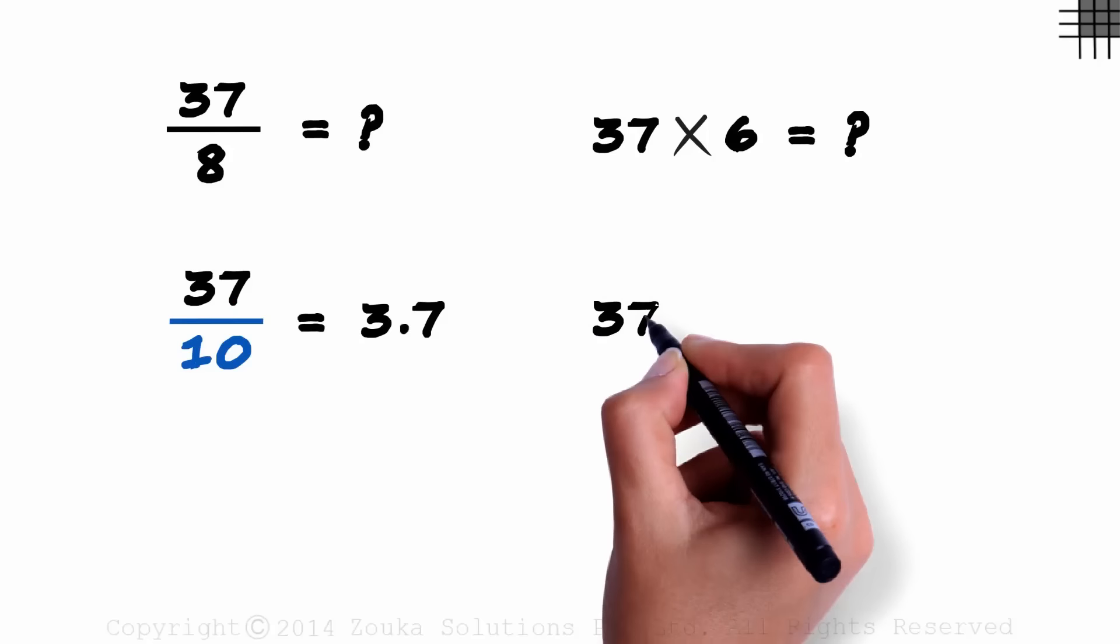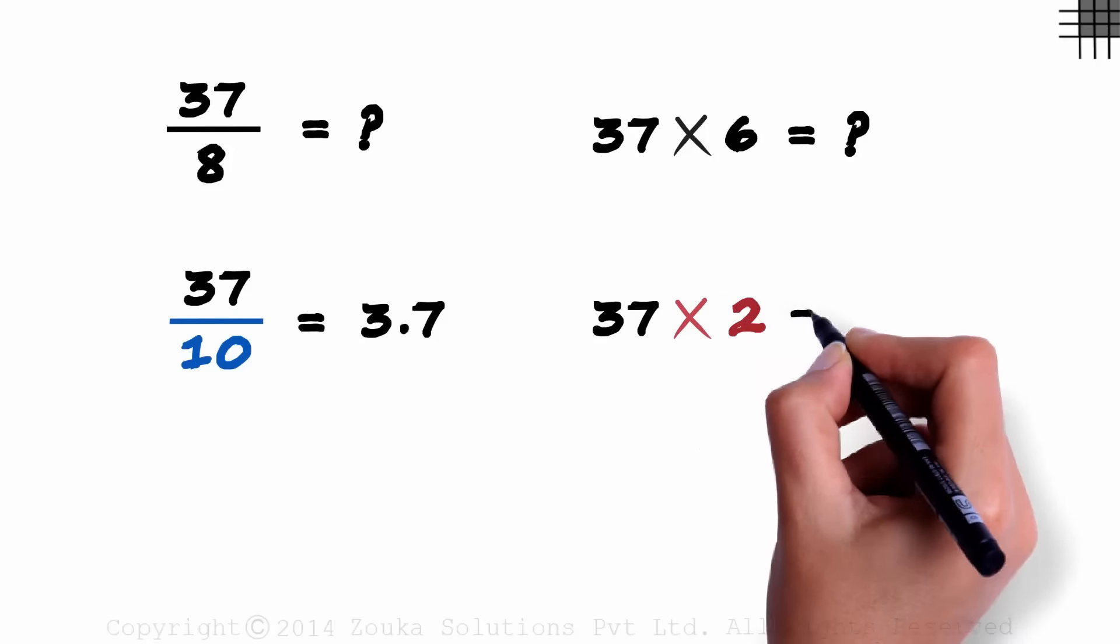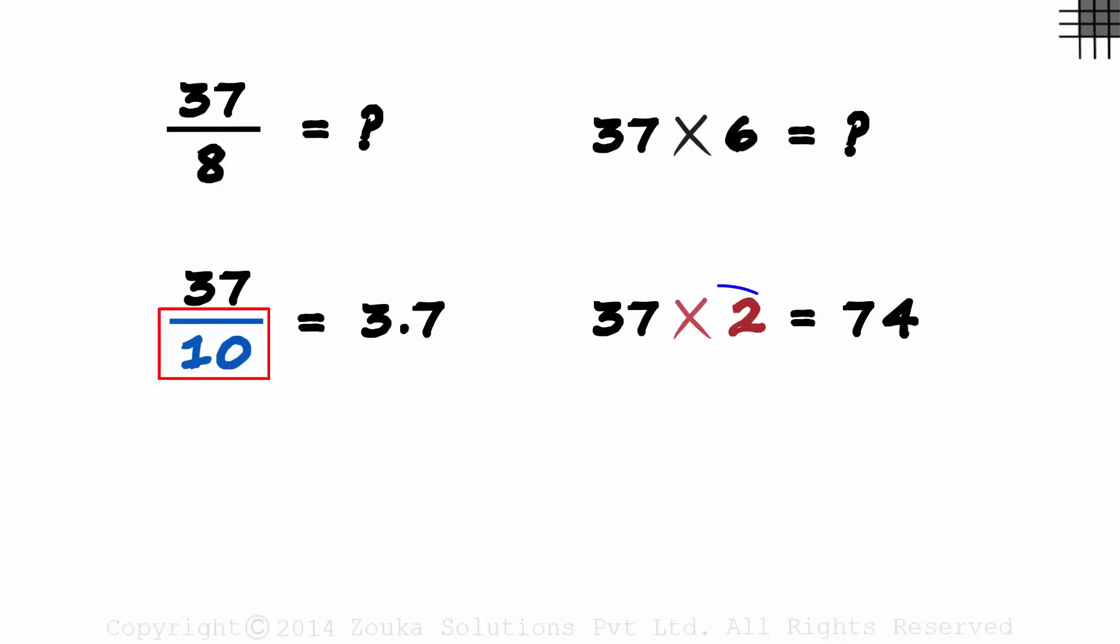And what about 37 multiplied by 2? It will equal 74. So division by 10 or multiplication by 2 are fairly simple to perform.